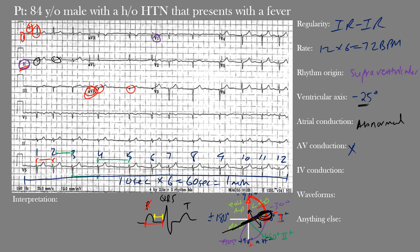How about intraventricular (IV) conduction? We look at the duration of the QRS complexes. The normal QRS duration is between 70 and 110 milliseconds, or about two to three small boxes. The main thing we're checking is whether the QRS interval is prolonged. We can see narrow QRS complexes throughout the EKG appearing within normal limits — the actual QRS duration here was 88 milliseconds, which is within the normal range of 70 to 110 milliseconds. So we have normal intraventricular conduction.